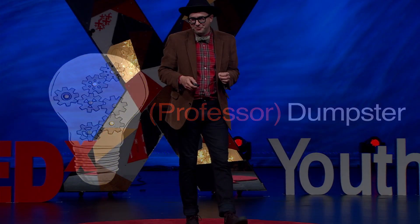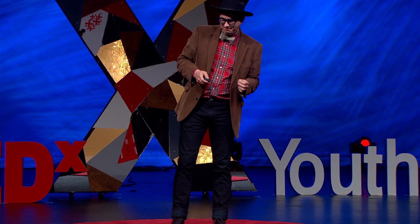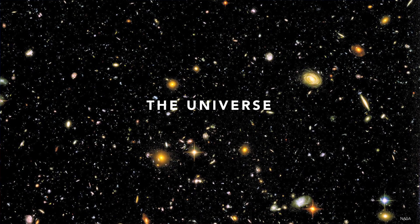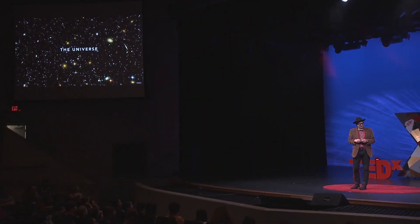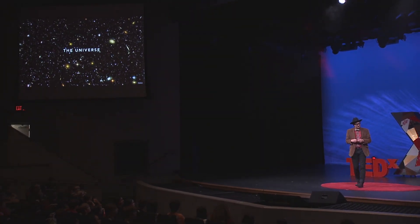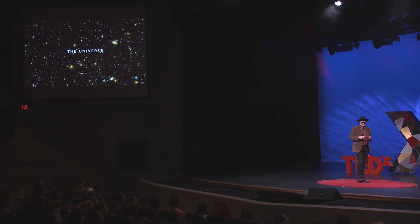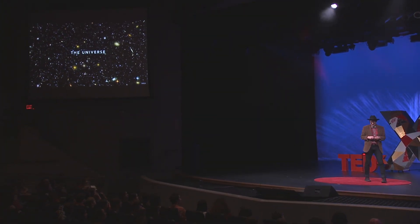This is the universe. It's a big place, it's old — about 14 billion years old. Each one of these spots of light are our neighbors; each one is a galaxy. The closest neighbor is about two and a half million light years away.